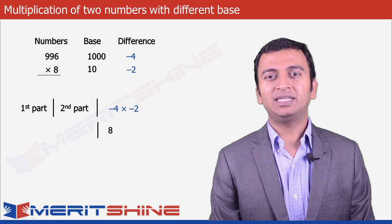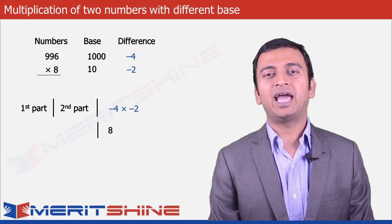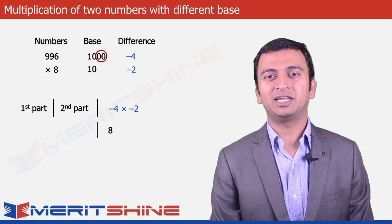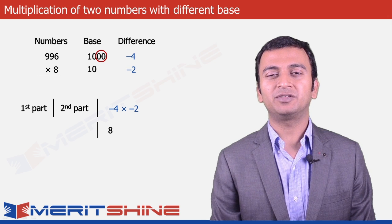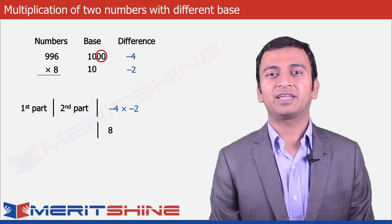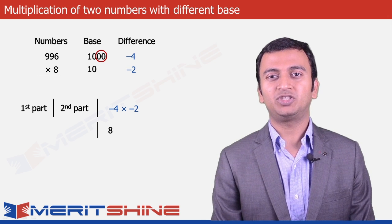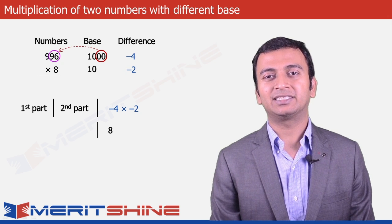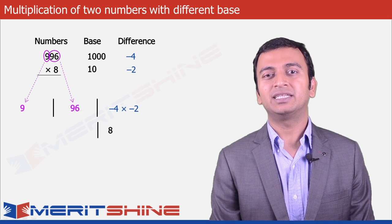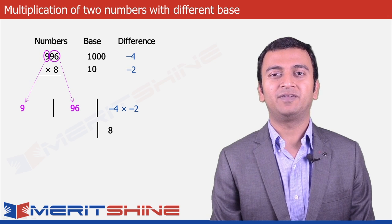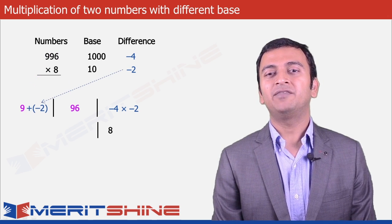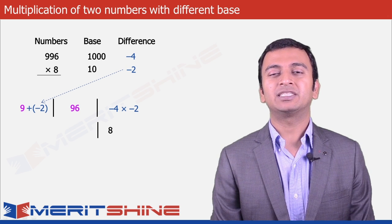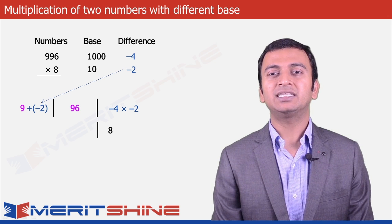To write down our second part, we will have to choose as many digits from the larger number from the right-hand side as is the difference in the number of zeros in the bases, which in our case is 3 minus 1 = 2. So 996 will be split as 9 and 96. 96 would come in the second part and 9 would go in the first part, along with the difference obtained from the second number which is minus 2, giving us the first part of our answer as 7.